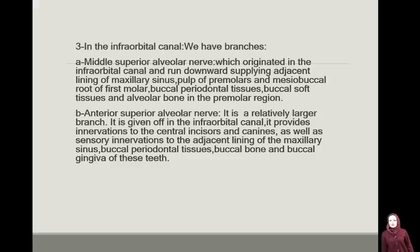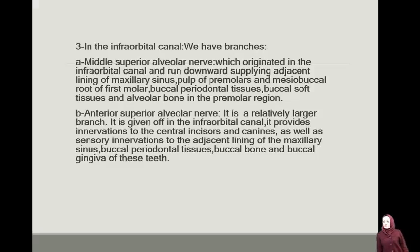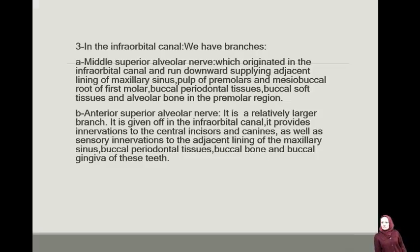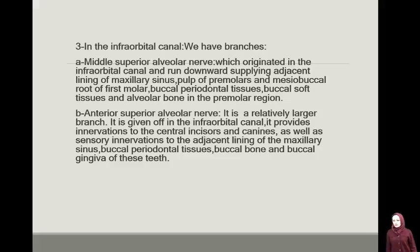B) Anterior superior alveolar nerve — it is a relatively large branch. In the infraorbital canal, it provides innervations to the central incisors and canines, as well as innervations to the adjacent lining of the maxillary sinus, buccal periodontal tissues, buccal bone, and the buccal gingiva of these teeth.